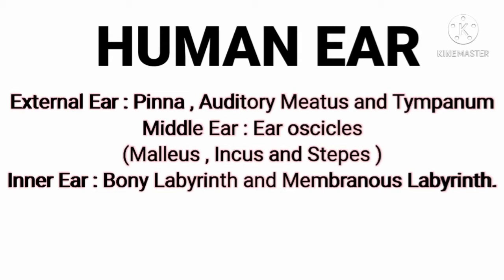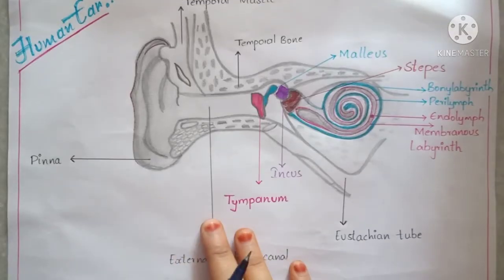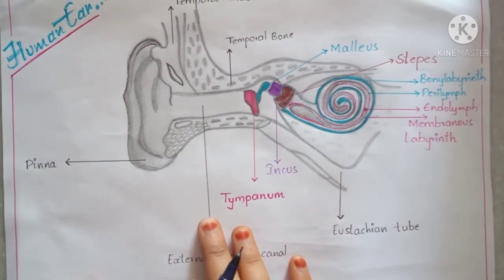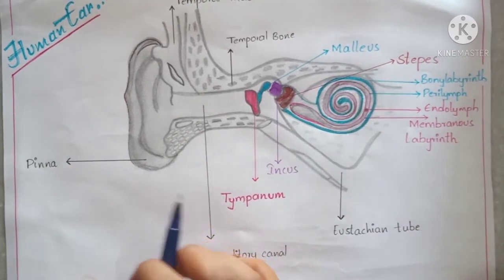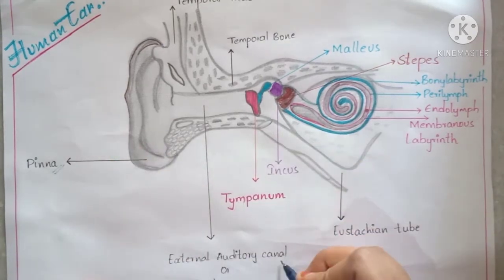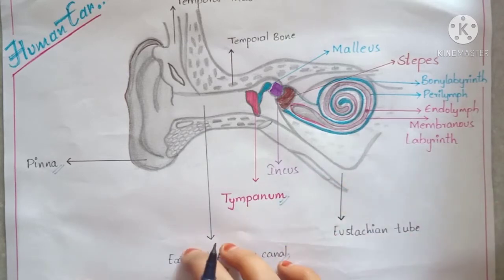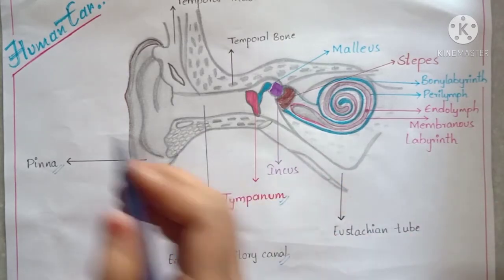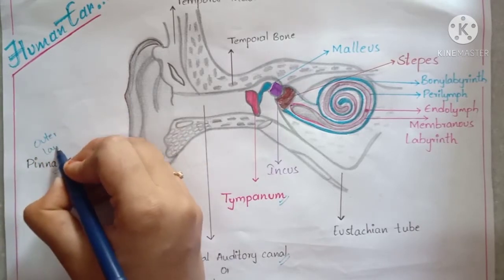Now let's look at each part in detail. The external ear has three main parts: pinna, auditory canal, and tympanum. The pinna is the outer layer of our ear which collects the sound waves.